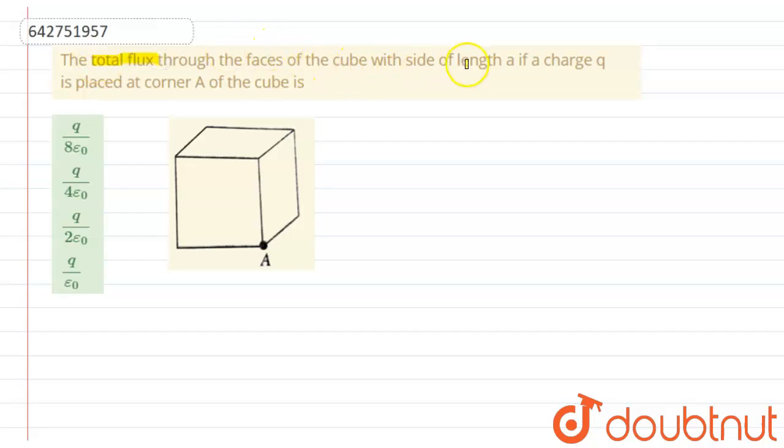The charge is placed at a corner of the cube, and we need to find the total flux through this cube.